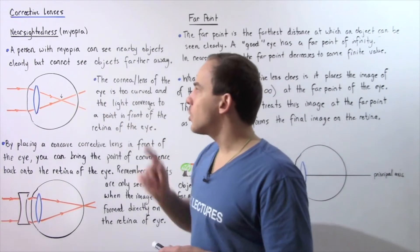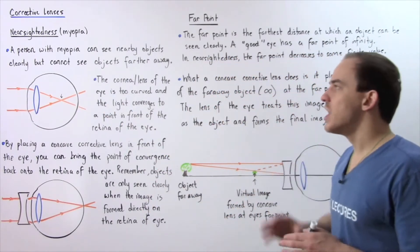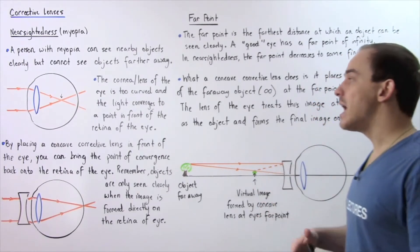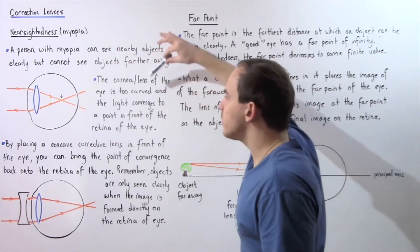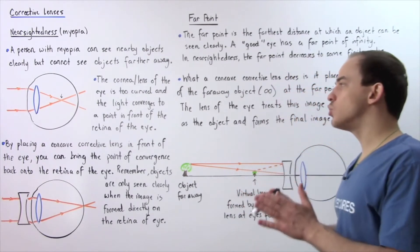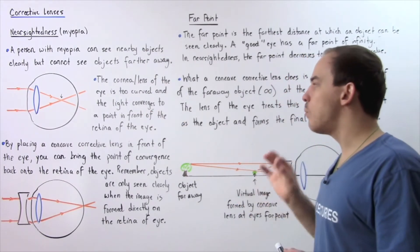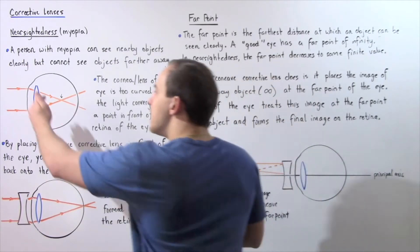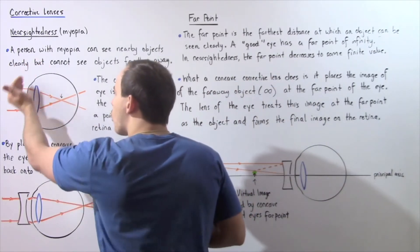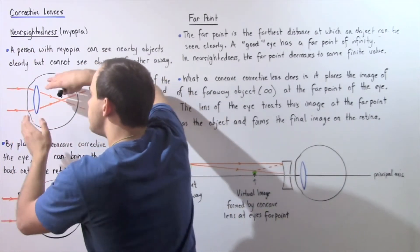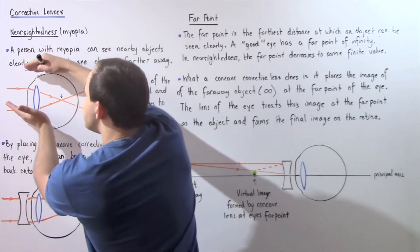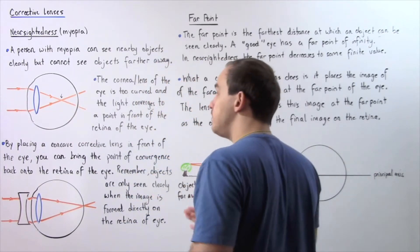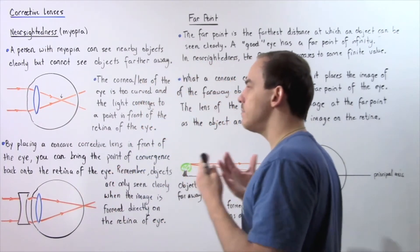A person with myopia can see nearby objects clearly but cannot see objects farther away. The reason is the cornea-lens of the eye is too curved, and light converges to a point in front of the retina. When rays of light come in from an infinite distance, they bend too much and meet at a point in front of the retina, so the object will not appear clearly.